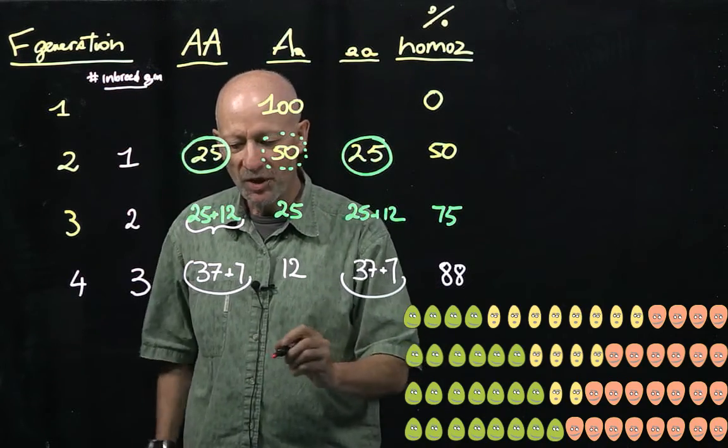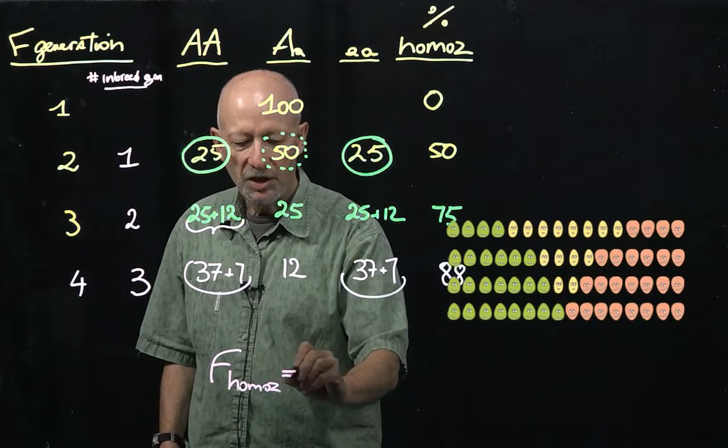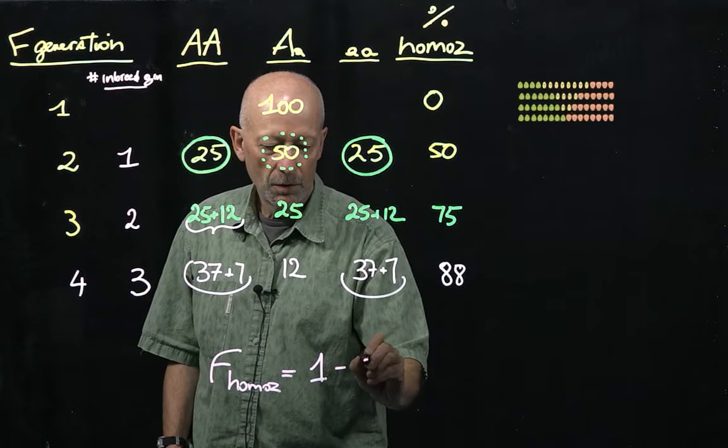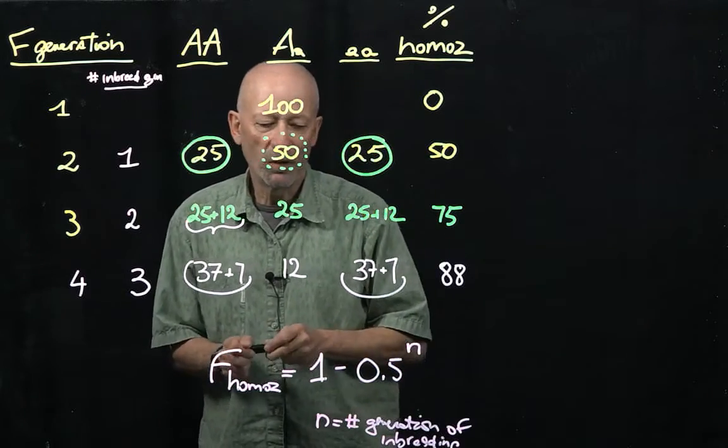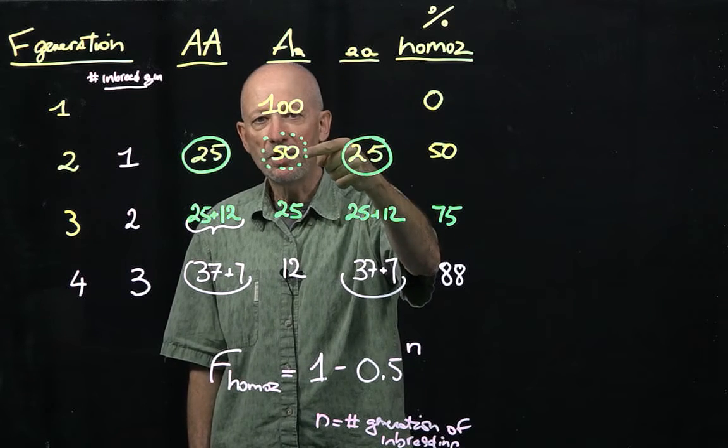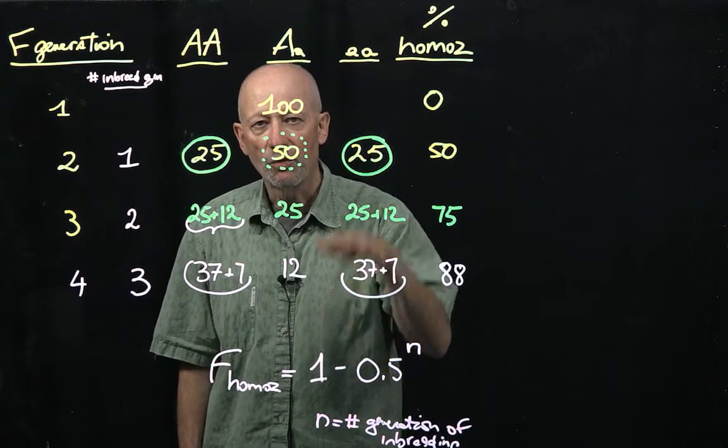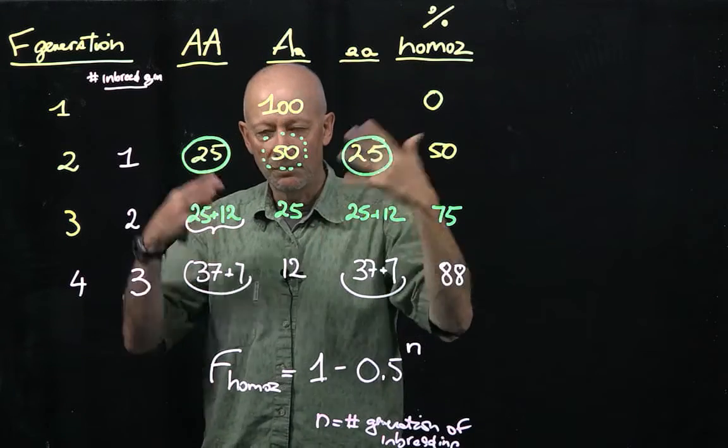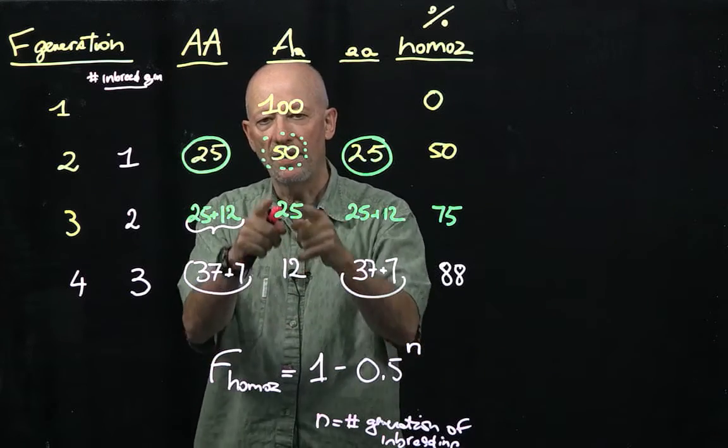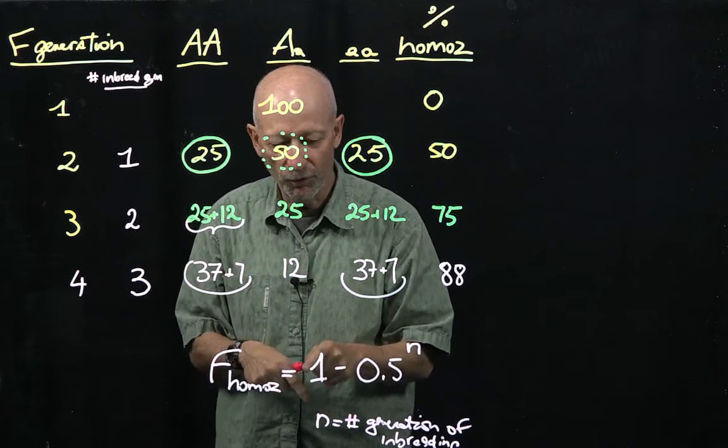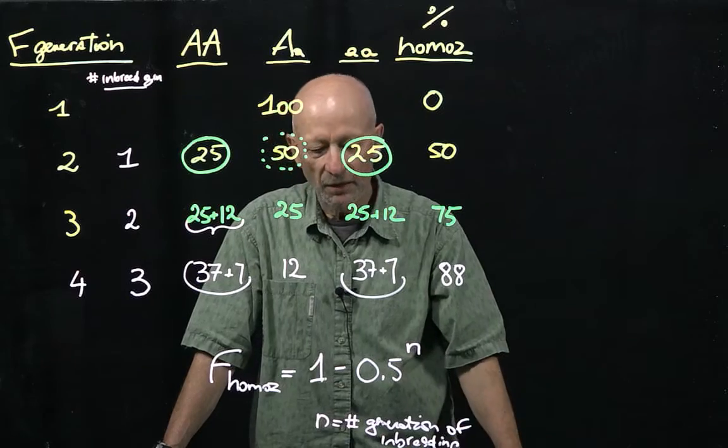I can calculate the fraction of homozygotes by the following formula. It's equal to 1 minus 0.5 to the power of n. Essentially, what this formula is telling you is that every inbreeding generation that we use, half of our plants will be left as heterozygotes. So, if we started with 100, half of the next population that will result from the first inbreeding generation will be heterozygote. And then half of that will be heterozygote again, and half of that, and so on and so forth. So, what you see here is that as n grows, as the number of generations grows, this number will become smaller and smaller, and the fraction of homozygotes increases.